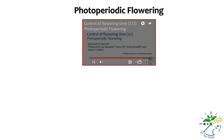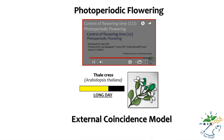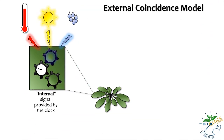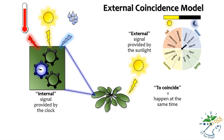After decades of experiments, a sophisticated model explaining how the long day plant Arabidopsis thaliana controls flowering has been described. This is called the external coincidence model. According to this model, two signals are required for flowering: one is internal to the plant — a molecular signal provided by the circadian clock — and the other is an external signal triggered by sunlight.